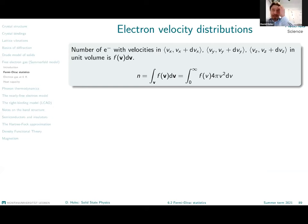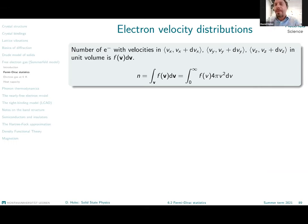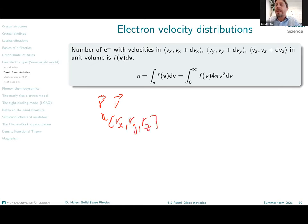Let us start talking about the distribution function. Each particle in our ensemble — and I assume that you have heard this in statistical physics — is essentially described by a velocity and a position, both of which are vectors. The position is a vector (rx, ry, rz) and the velocity is a vector (vx, vy, vz).